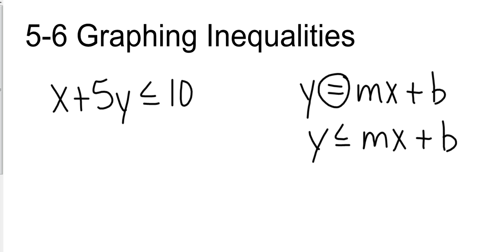So what we want to do is get y by itself. So first step, we're going to subtract the x from both sides. Now, I'm going to write this in order because I want my x first.